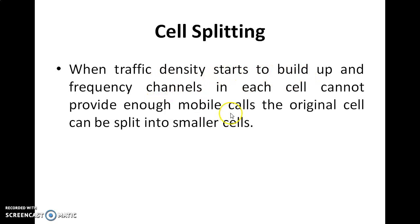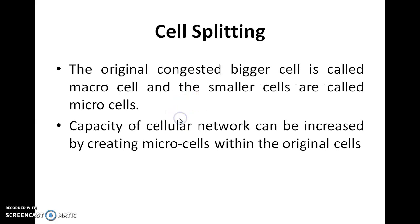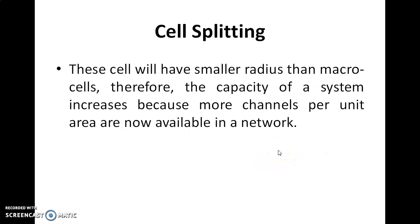When traffic density starts to build up and frequency channels in each cell cannot provide enough number of mobile calls, the original cell can be split into smaller cells. When you cannot handle the traffic density, the original congested bigger cell is called macro and the smaller cell is called micro cell.